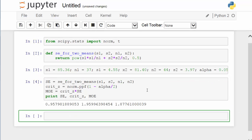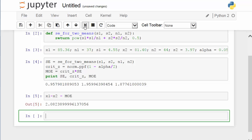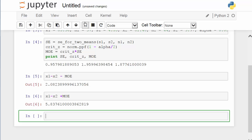Alright, the standard error is about 0.96. And critical z-score, not surprisingly, is 1.96. The resulting margin of error is 1.8776. Now, let's compute the lower and upper bound of the 95% confidence interval. Here's the lower bound, which is 2.08. Here's the upper bound, which is equal to 5.8376. The 95% confidence interval for the difference between these two population means is 2.08 to 5.84.